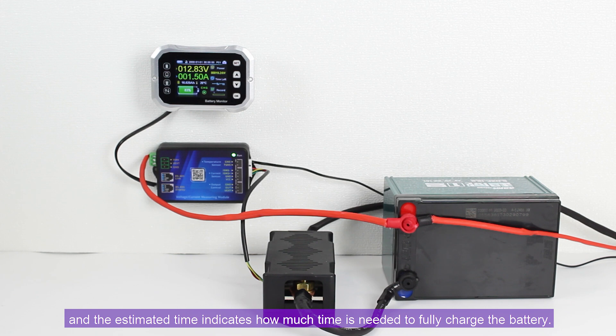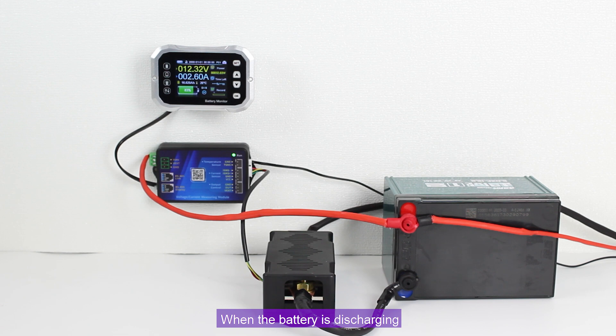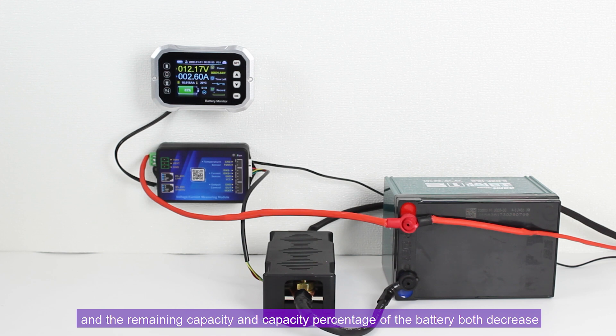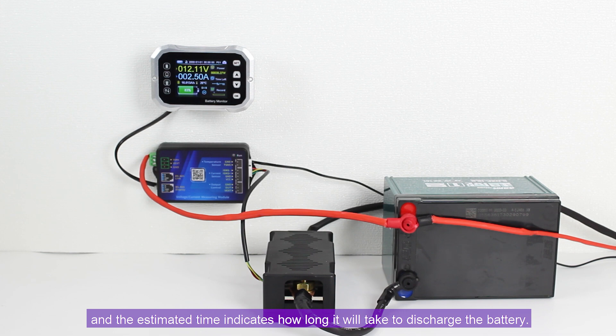And the estimated time indicates how much time is needed to fully charge the battery. When the battery is discharging, the current color is blue, and the remaining capacity and capacity percentage of the battery both decrease. And the estimated time indicates how long it will take to discharge the battery. Thank you for watching.